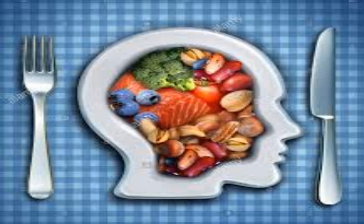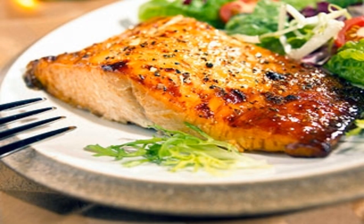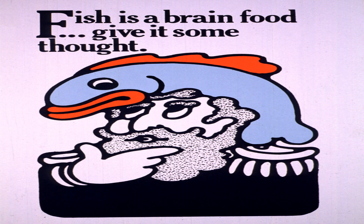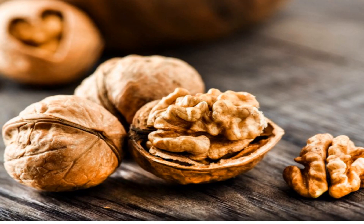First is fatty fish like salmon, which is rich in omega-3 fatty acids such as EPA (eicosapentaenoic acid) and DHA (docosahexaenoic acid). These help in new neuron formation and reduce inflammation in brain cells. Second is walnut, which is rich in vitamin E, antioxidants, and omega-3 fatty acids, helping to improve reasoning capacity.